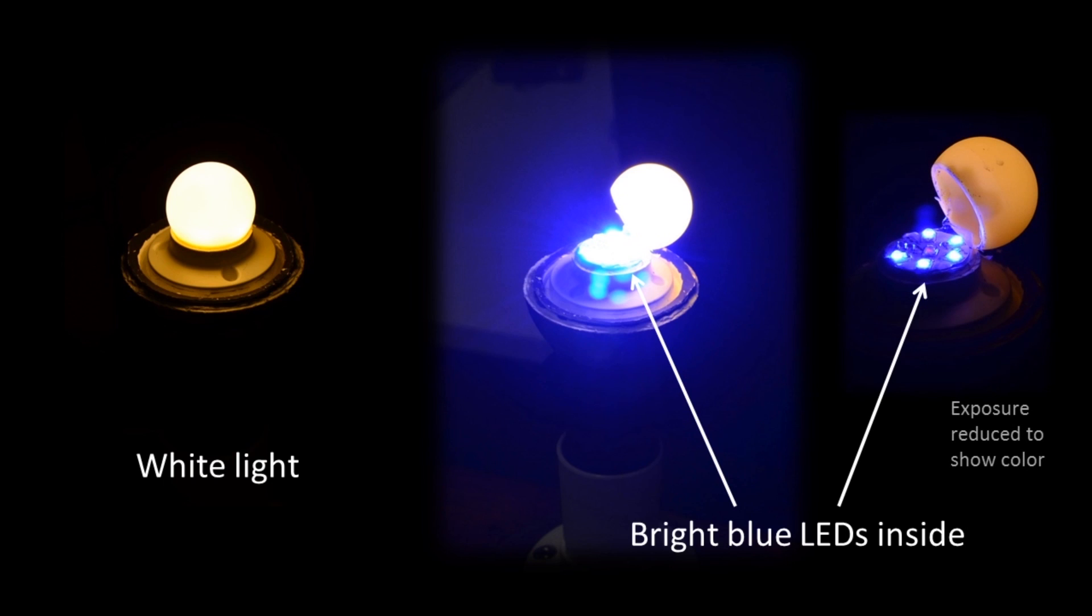So we've turned down the exposure in the image a little bit here and you can see each of those little bright blue glowing devices. That's what's under the cap are the blue light emitters but what we want is white light.